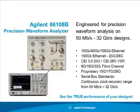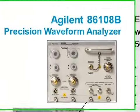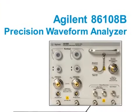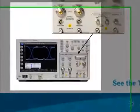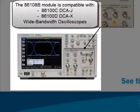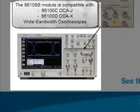This short video provides an overview of the Agilent 86108B Precision Waveform Analyzer, the newest plug-in module for the 86100C DCA-J and the 86100D DCA-X Wide Bandwidth Oscilloscope platforms.